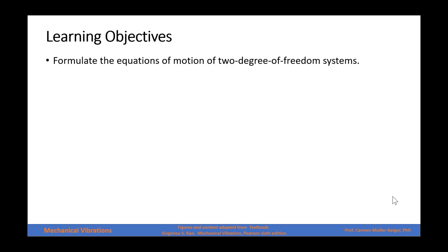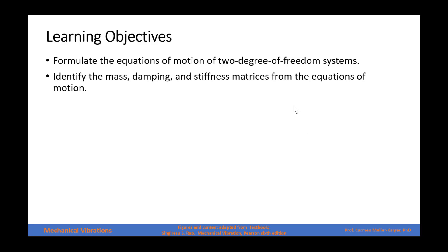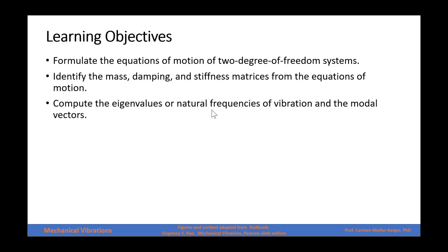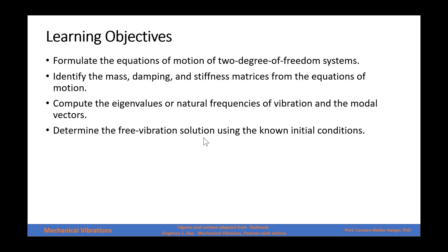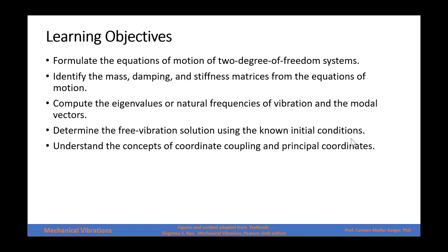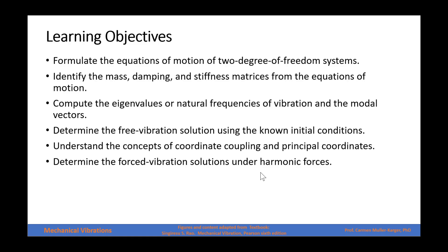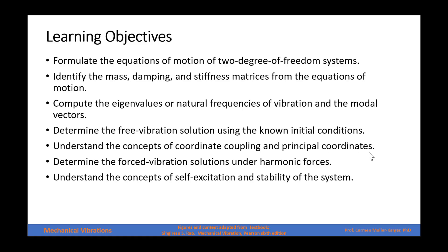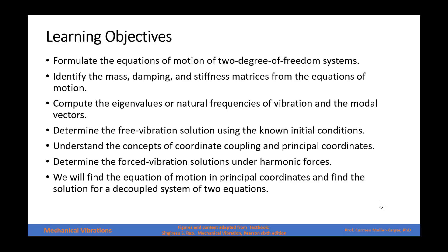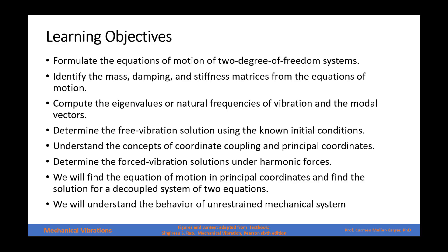The learning objectives of this presentation are the following: formulate the equation of motion of a two-degree of freedom system; identify the mass, damping, and stiffness matrices from the equation of motion; compute the eigenvalues or natural frequencies and the modal vectors by solving the eigenvector problem; determine the free vibration solution using initial conditions; understand the concepts of coordinate coupling and principal coordinates; determine the forced vibration solution under harmonic motion by two methods using the generalized coordinates and the principal coordinates; find the equation of motion in principal coordinates and find the solution for the decoupled system of two equations; and understand the behavior of an unrestrained mechanical system.